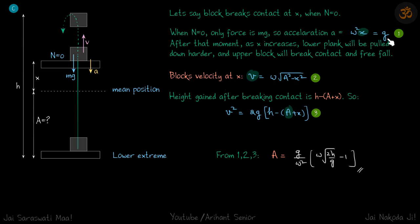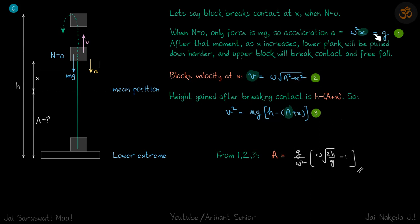We now have three equations. First: ω²x = g. Second: velocity at point of losing contact is v = ω√(a² - x²). Third: in free fall, v² = 2g(h - a - x), since the height gained in free fall is h minus the distance already above the initial position (a - x... wait, a + x from start, so remaining height is h - (a + x)... giving v² = 2g(h - a - x)). Solving these three equations for the variables x, v, and a yields the required amplitude.